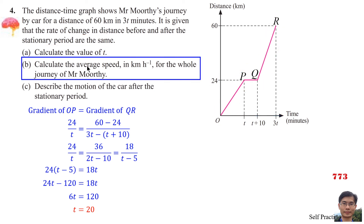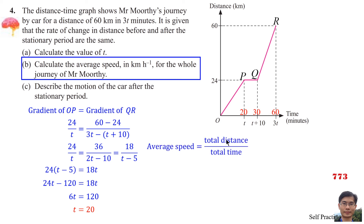Part B: Calculate the average speed in kilometres per hour for the whole journey of Mr. Moody. Substituting T equals 20, the stationary point is at 20 minutes and the journey ends at 60 minutes. Average speed equals total distance divided by total time. Total distance is 60 km. Total time is 60 minutes, converted to hours by dividing by 60. Average speed equals 60 km per hour.